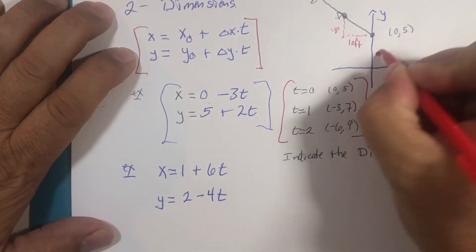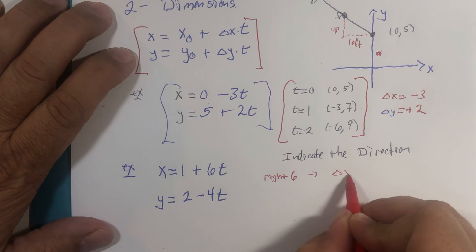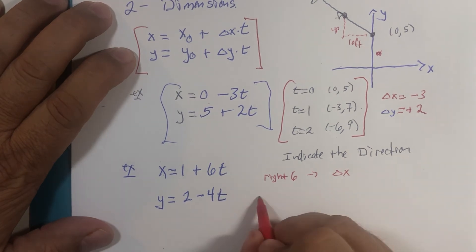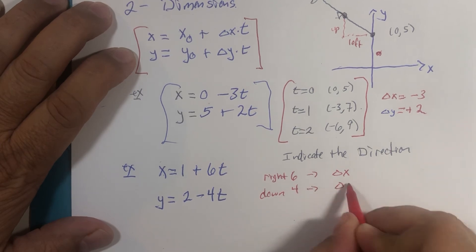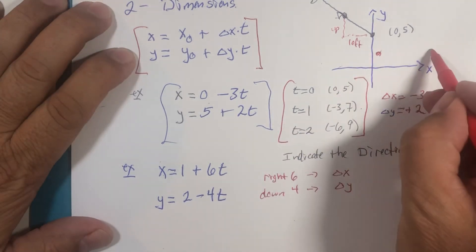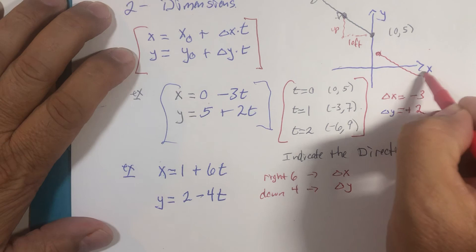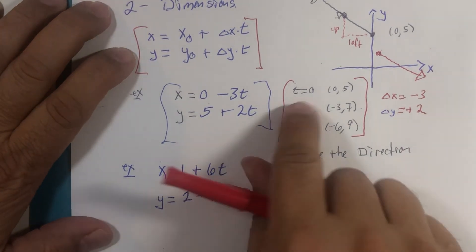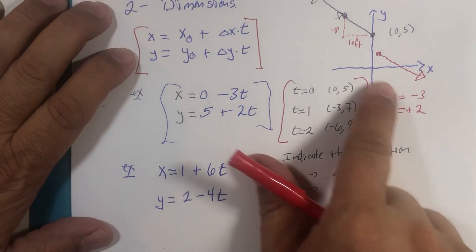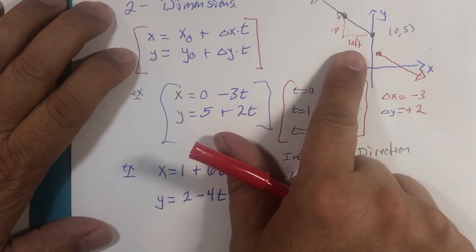And let's go right six units, that's what our delta x is, and down four units, that's what our delta y is. So if I were to go right six and down four, that would look like this.